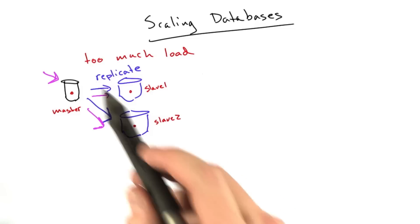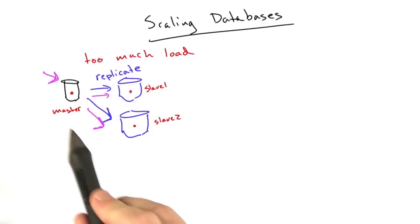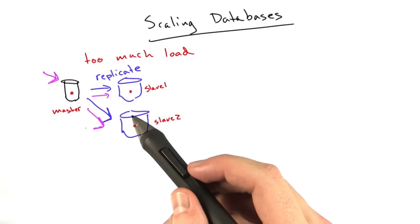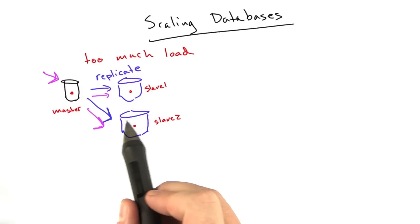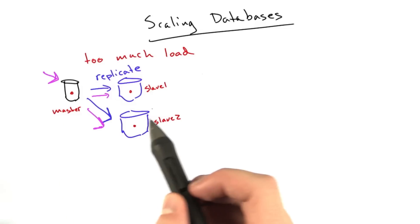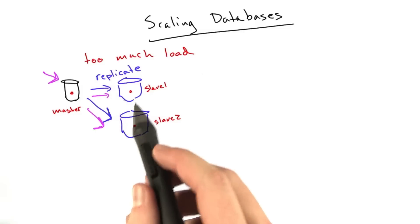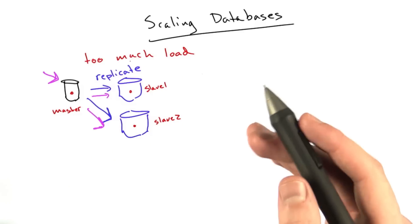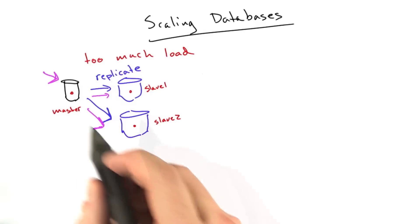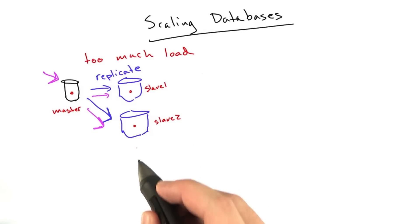Now we have three databases with all of our data on it. So if you've got a site like Reddit that's getting thousands of requests a second, instead of sending all of the database reads to this database, we can send it to these databases. That alleviates a lot of load off of this master database.